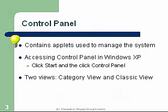The Control Panel contains applets used to manage the system. Accessing the Control Panel in Windows XP: just click the Start button and then click Control Panel. Two views: you have the Category View and the Classical View. Classical View is the older view.